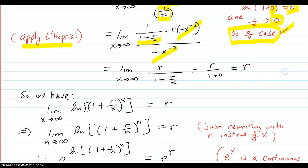So now we have this. This limit, previous, is equal to this now. And as X goes to infinity, this part here goes to 0. So this goes to r over 1 plus 0, which is r. Very nice.